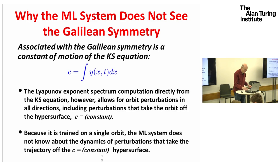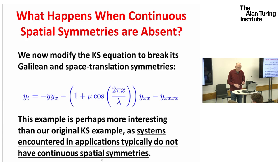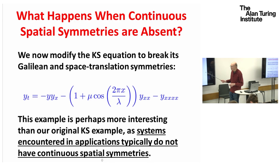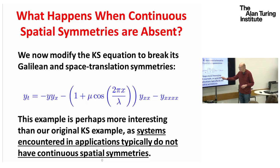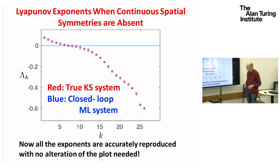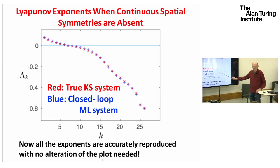To test this reasoning, we modified the Kuramoto-Sivashinsky equation to break its Galilean and space translation symmetry by adding an inhomogeneous term multiplying the second derivative of y with respect to x, while keeping periodic boundary conditions. Repeating the analysis with this modified equation, the two spectra now match even better than before — and without any cheating. This confirms the theoretical argument.